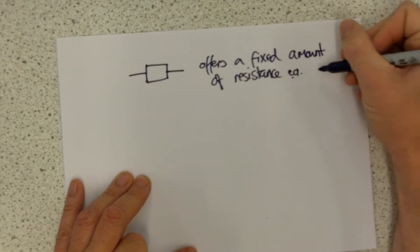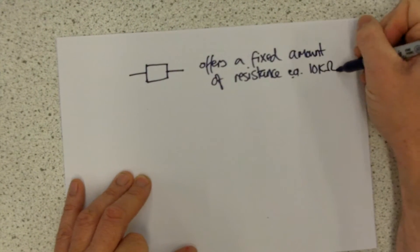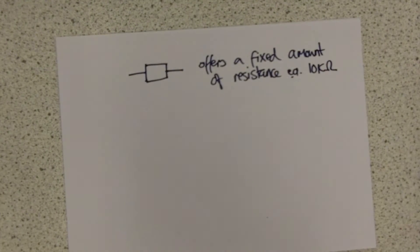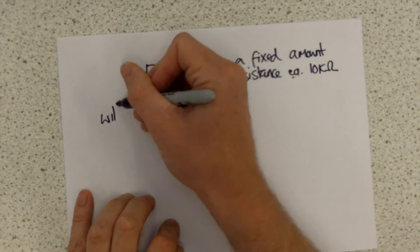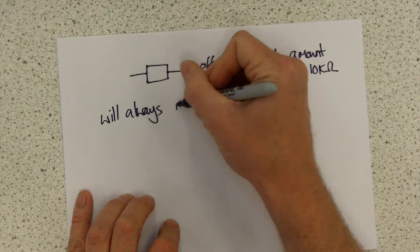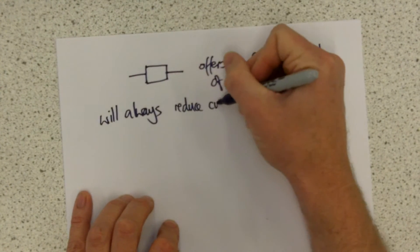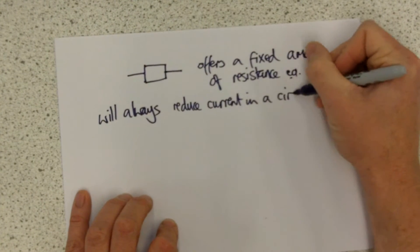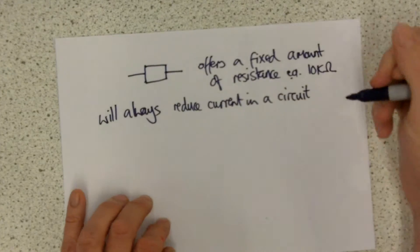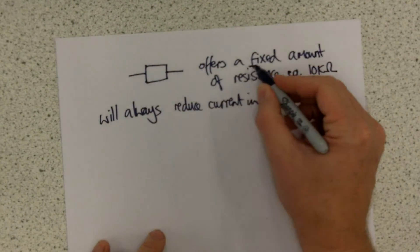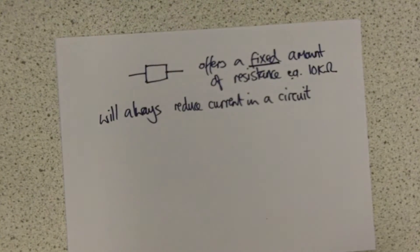For example, it might be 10 kilo-ohms — 10,000 ohms. A resistor will always reduce the current in a circuit. If you take the resistor out, the current will go up. If you put the resistor in, the current will go down. A fixed resistor changes your current by a fixed amount, and nothing can change that.